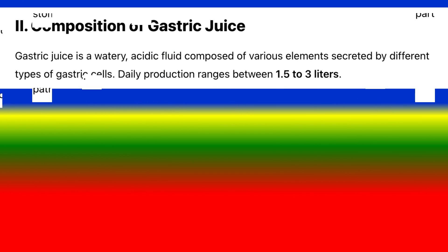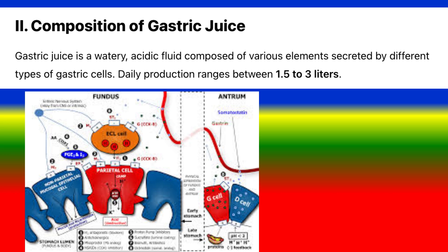Composition of gastric juice: Gastric juice is a watery, acidic fluid composed of various elements secreted by different types of gastric cells. Daily production ranges between 1.5 to 3 liters.